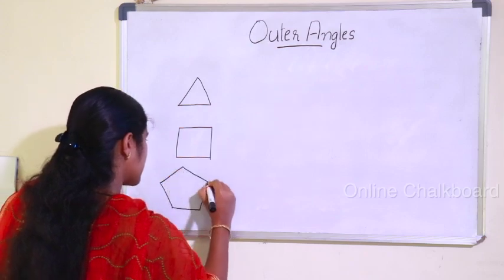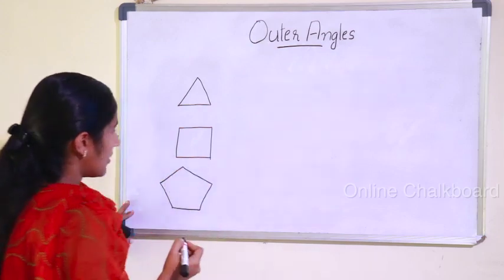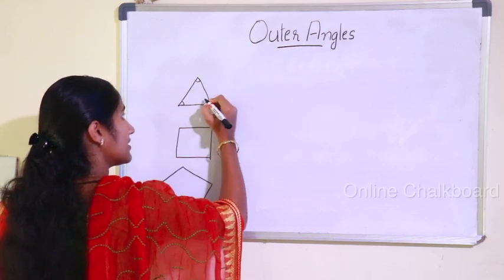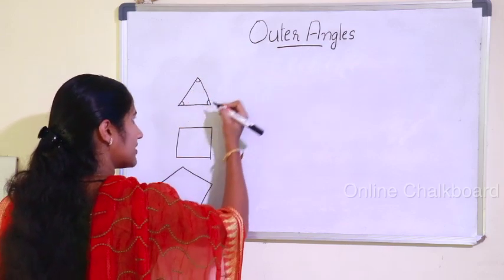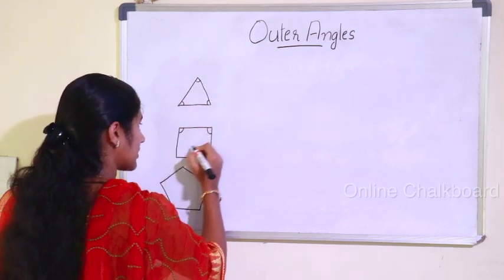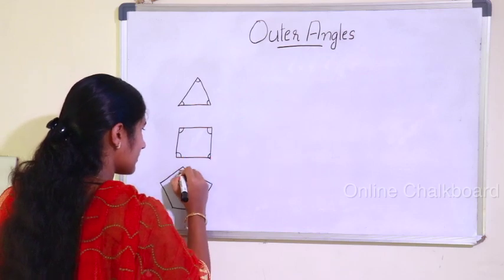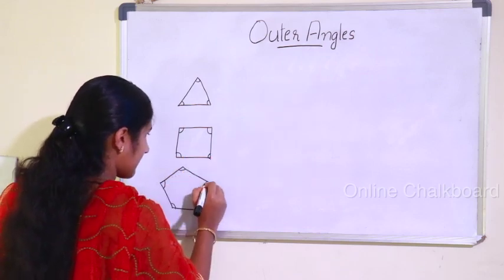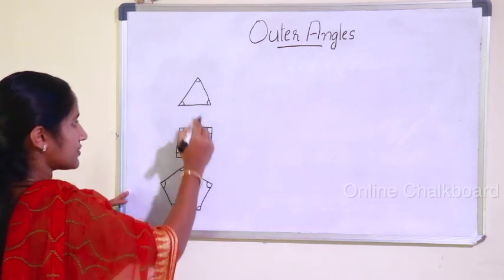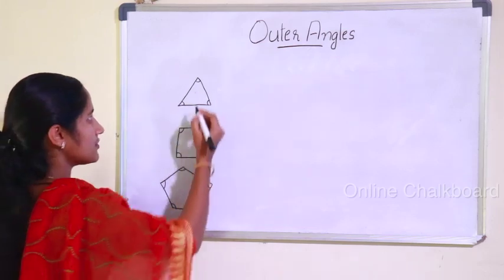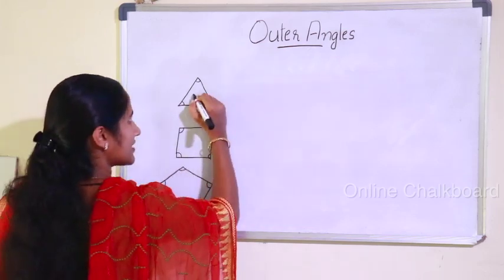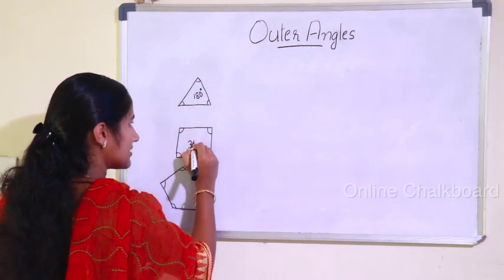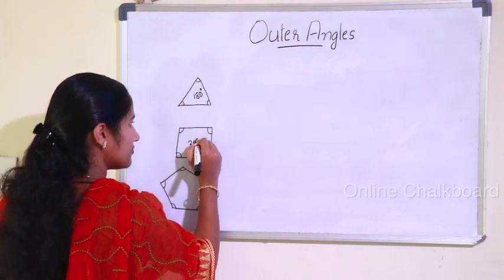This is what we need to consider. These angles here are the inner angles. In the same way, a Triangle has inner angles summing to 180 degrees, and a Quadrilateral has inner angles summing to 360 degrees.